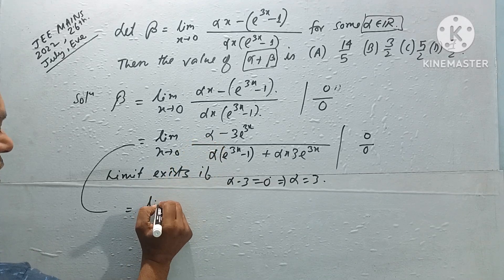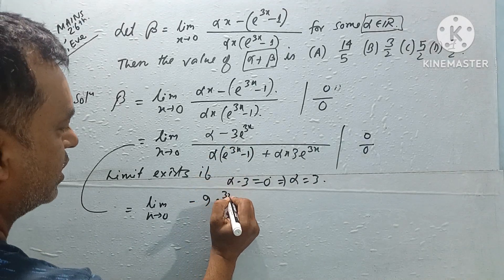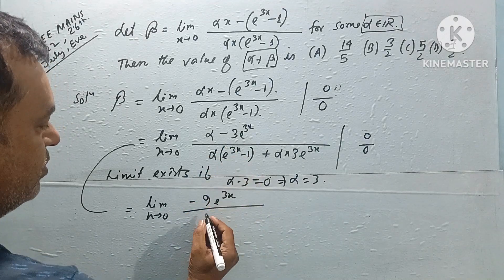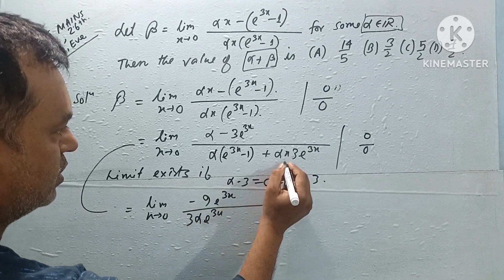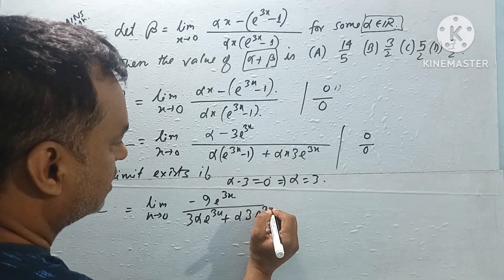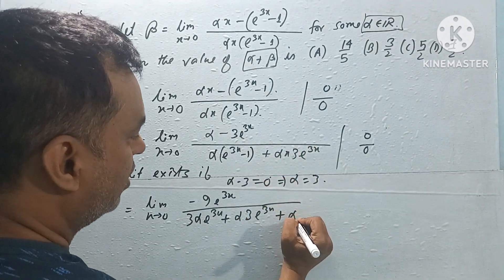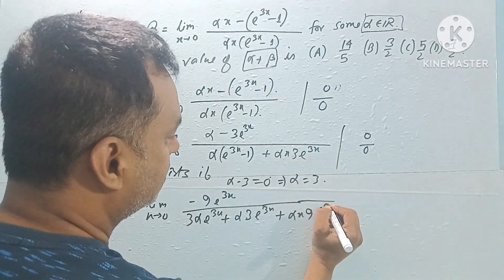After differentiating again, we get zero minus 9 e power 3x on top. On the bottom, alpha becomes 3 alpha e power 3x, plus alpha x gives 9 e power 3x, so 3 alpha e power 3x plus 9 e power 3x.